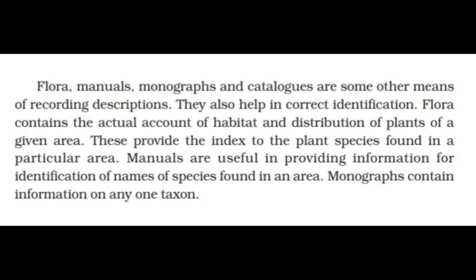Flora, manuals, monographs, and catalogs are other means of recording descriptions and help in correct identification. Flora contains the actual account of habitat and distribution of plants of a given area and provides an index to plant species found there. Manuals are useful in providing information for the identification of names of species found in an area. Monographs contain information on any one taxon.